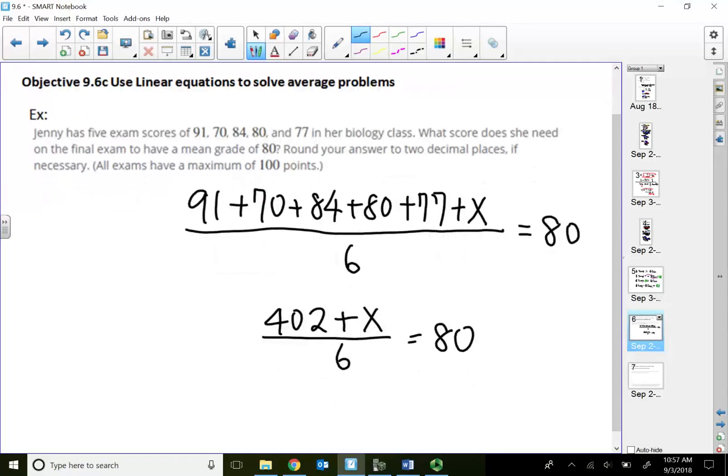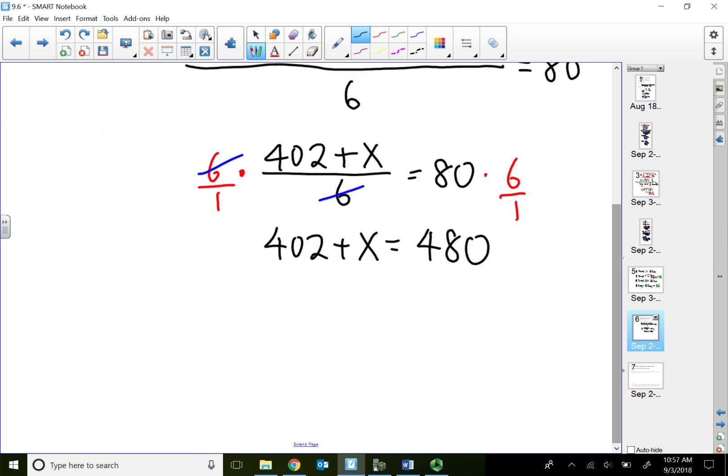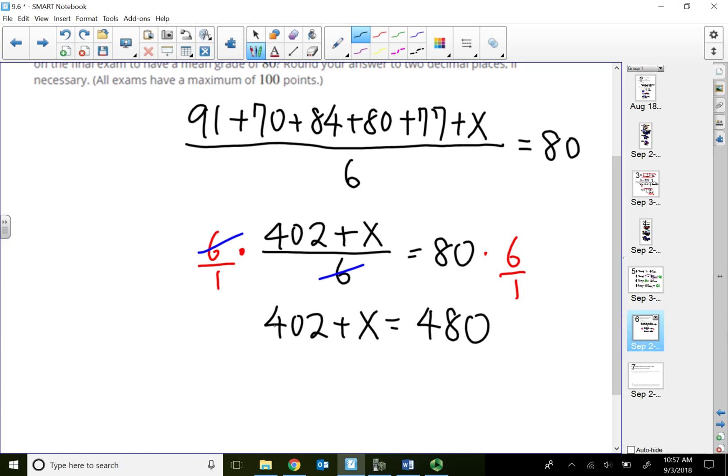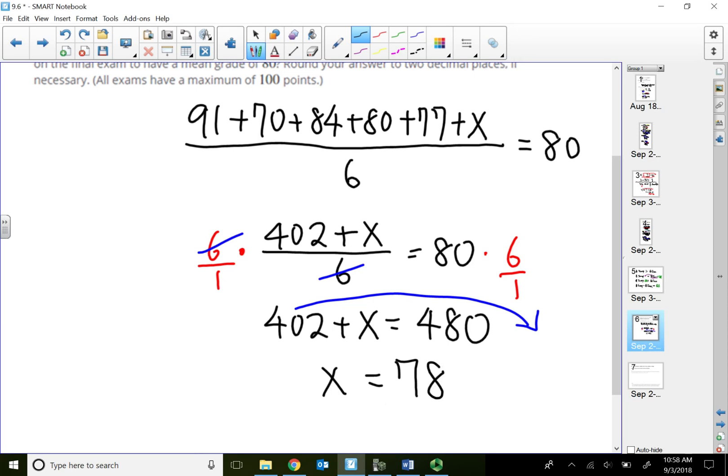So since I only got two terms, what I can do is multiply both terms by the LCD 6 to clear the fraction. The top six and bottom six will cancel out. And that will give me 402 plus x equal to 480. So what the 480 represents is the total number of points that you want for the sixth exam grade. So far I got 402 points already. So if I move my 402 points to the other side, subtract from the total that I'm looking for, which is 480, 480 minus 402, that will tell me I need to make 78 on the last exam in order to reach 480 points or 80 average.